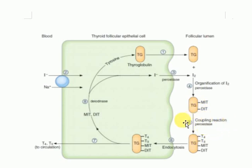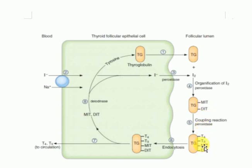Step 5 is the coupling reaction: if two molecules of DIT combine, it forms T4; if one molecule of DIT combines with one molecule of MIT, it forms T3. More T4 is formed compared to T3, but T3 is the most reactive form of thyroid hormone.